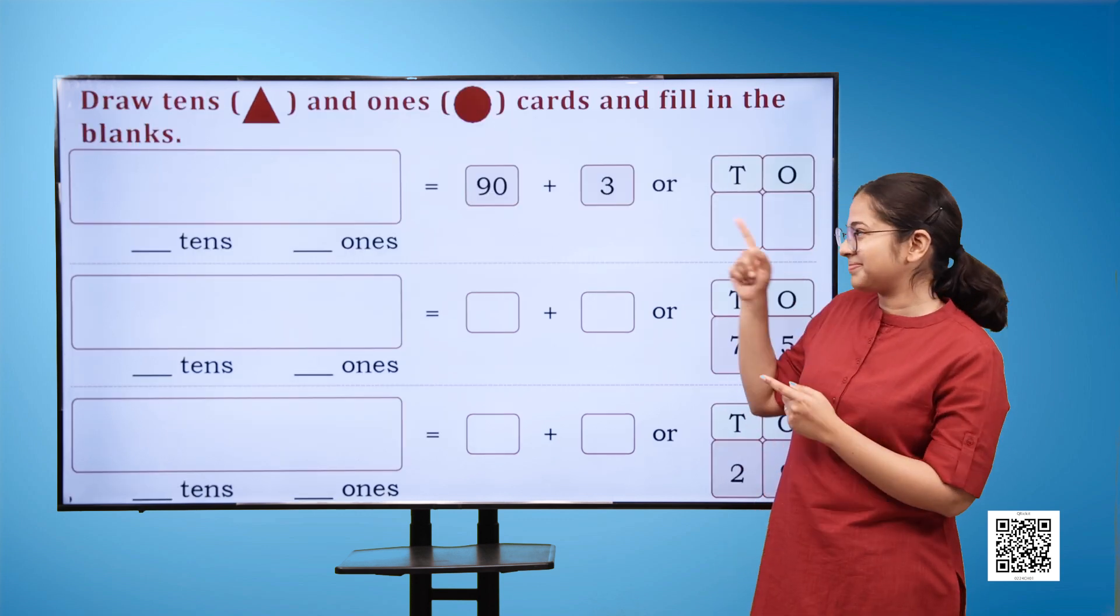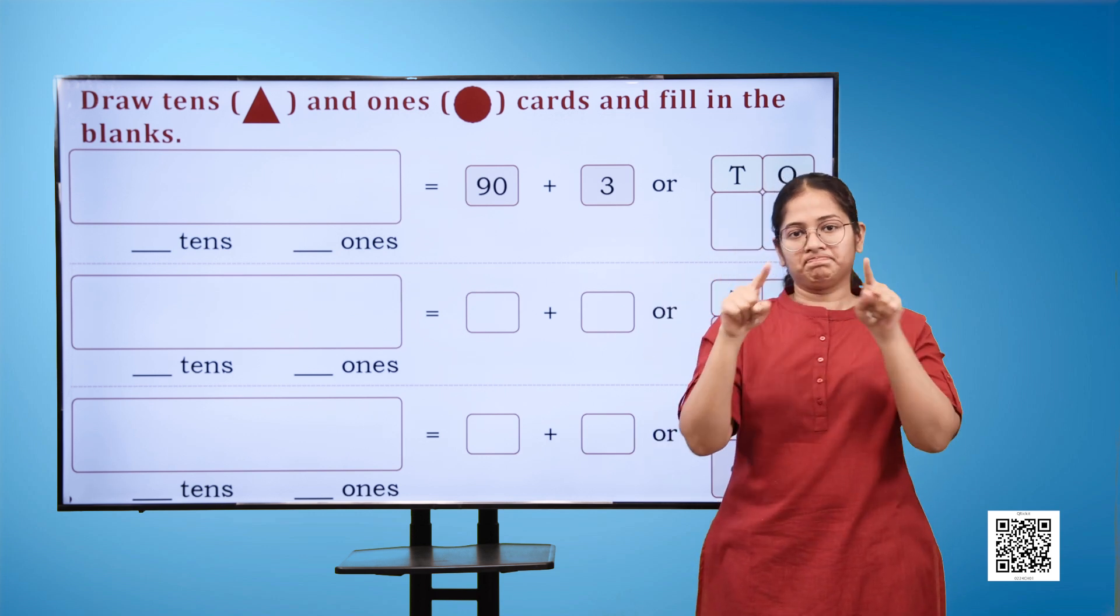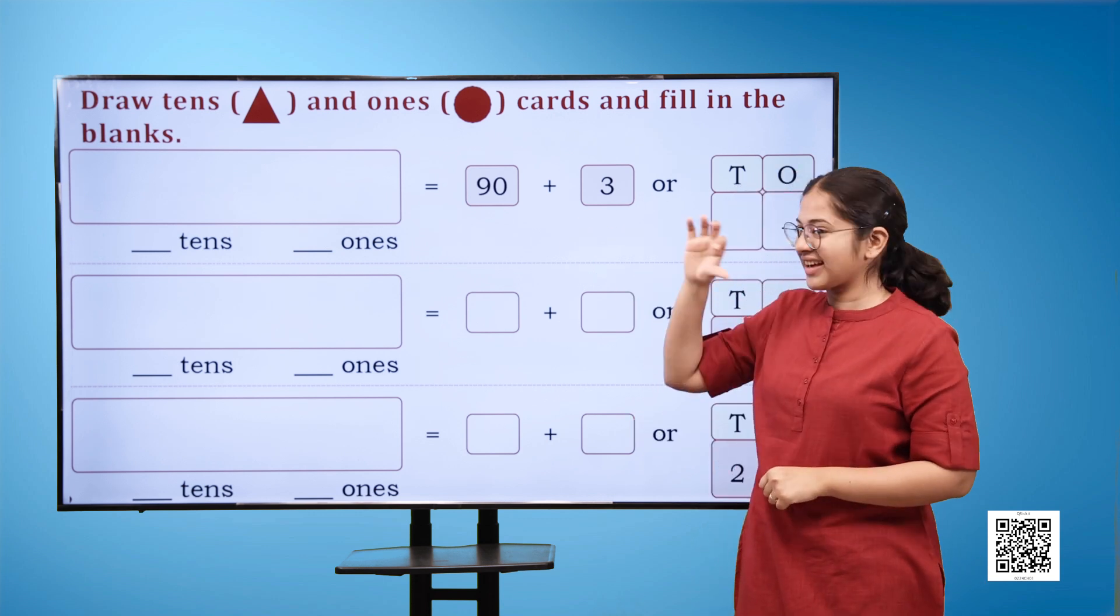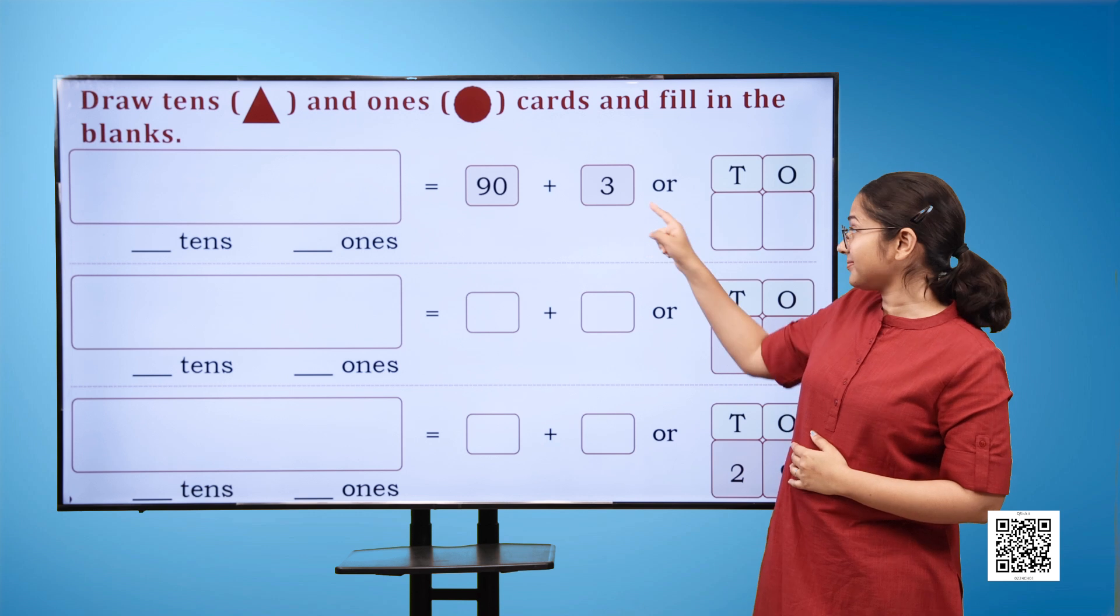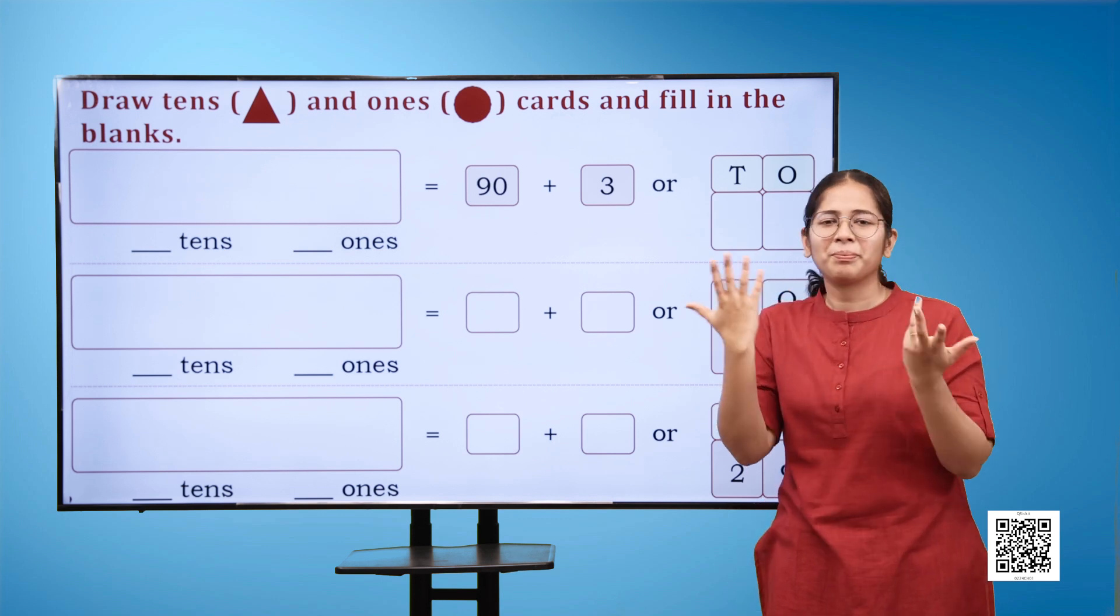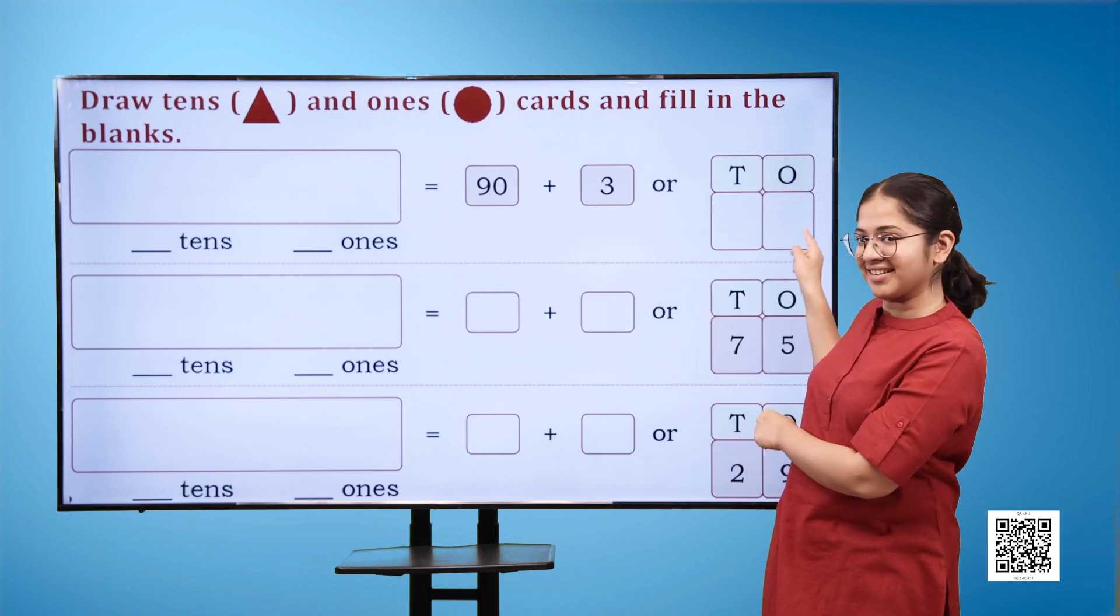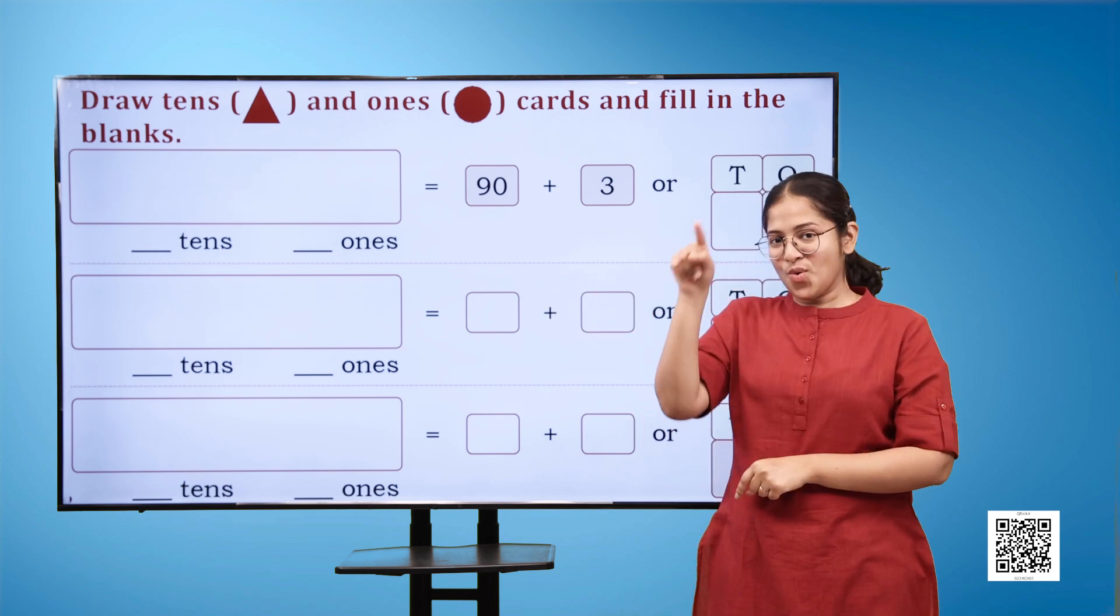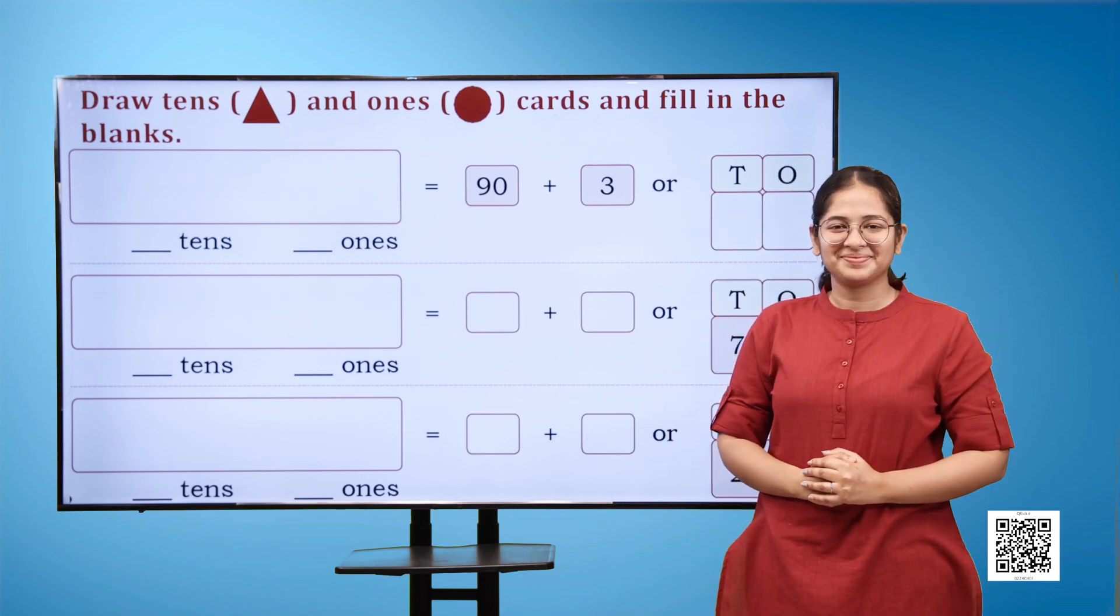Draw tens, that is brown triangles, and ones, that is brown circles cards in the given space and fill in the blanks. Blank space for drawing blank tens blank ones is equal to 90 plus 3 or T blank O blank. Blank space for drawing blank tens blank ones equals to blank plus blank or T 7 O 5. Blank space for drawing blank tens, blank ones is equal to blank plus blank or T 2 O 9.